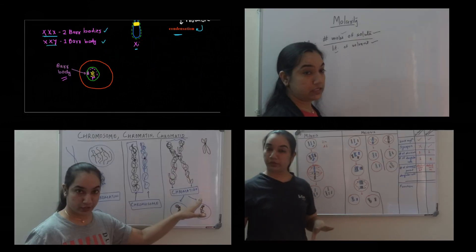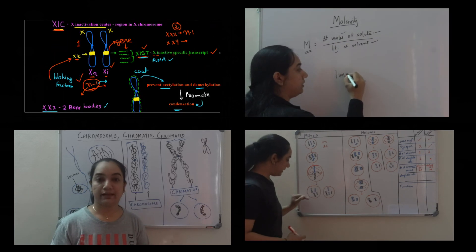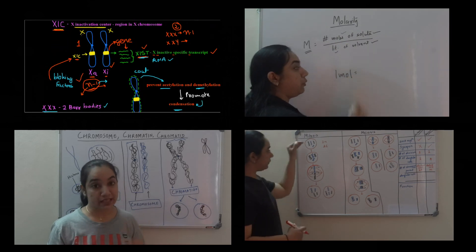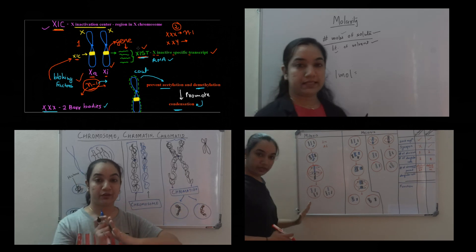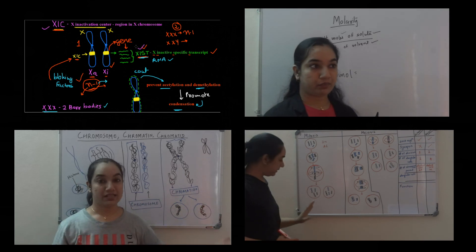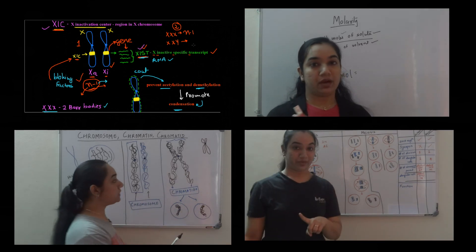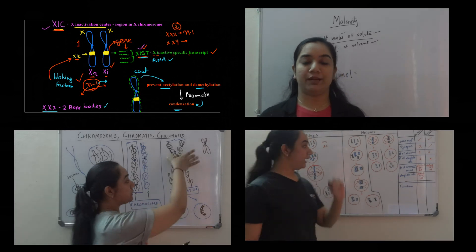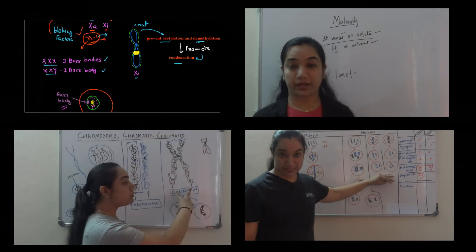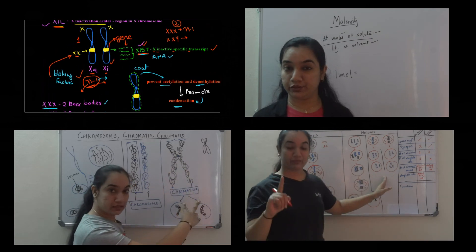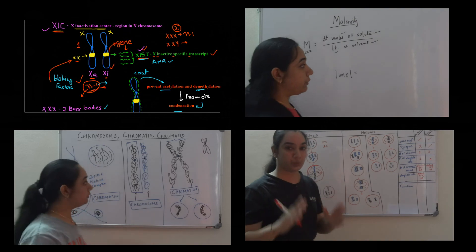That's all — this is how the X chromosome gets inactivated. The main things to remember are XIC, the role of XIC, and the role of XIST. I hope this video was helpful. Do subscribe to the channel for a new video every week, and I'll see you next time. Until then, keep learning.